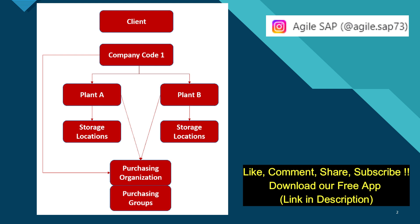Next is plant. The plant refers to a facility where the material stock is kept, stored and inventorized. There can be various activities that take place in the plant like different types of transfers and goods movement.